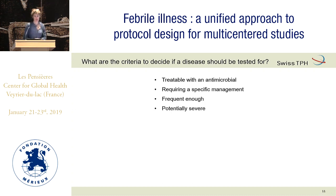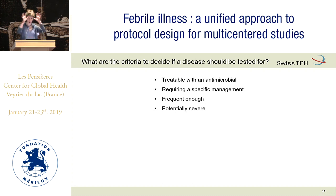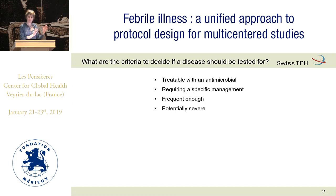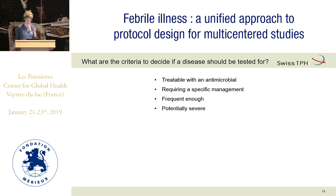What would be the criteria to decide that a disease should be tested for? I will concentrate on unspecific fever, because for diarrhea — forget about antibiotics, just zinc and ORS — and respiratory infections, I think at primary care level none of these children, if they are well-nourished, need antibiotics. It's all viruses. For unspecific fever, one criterion should be that it is treatable with an antimicrobial or requires specific management.